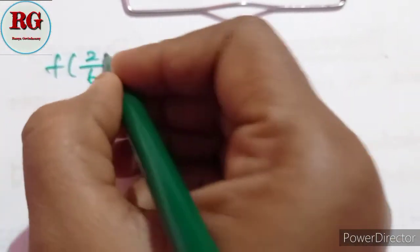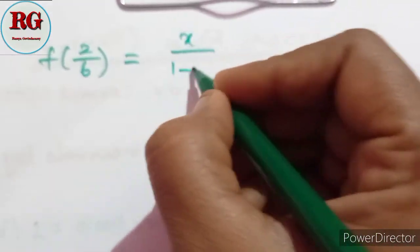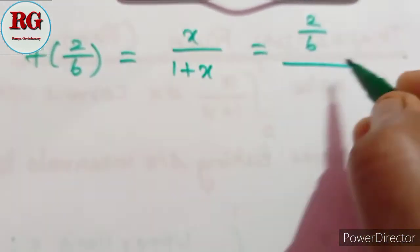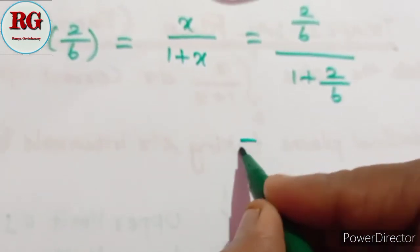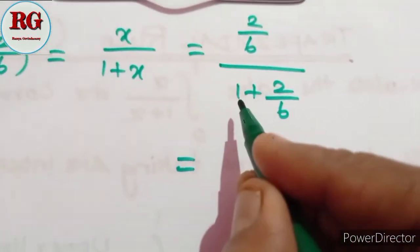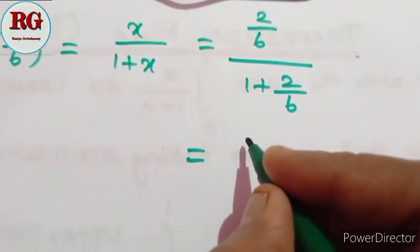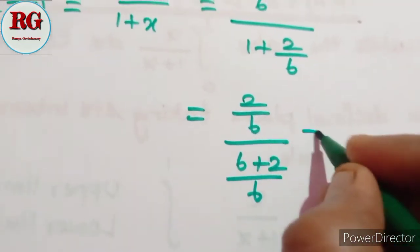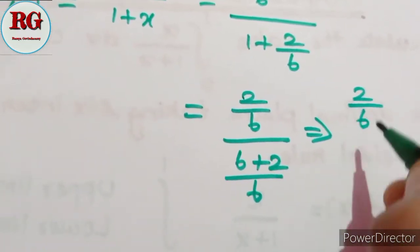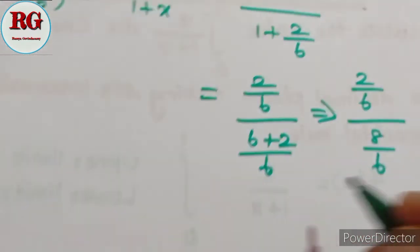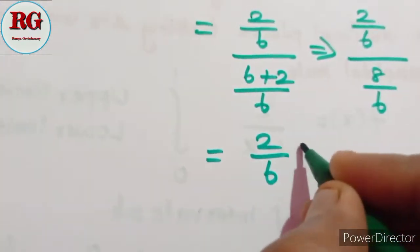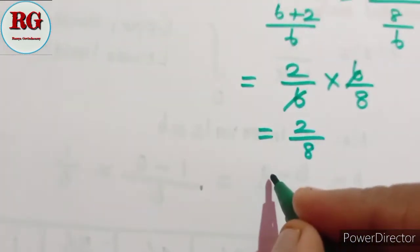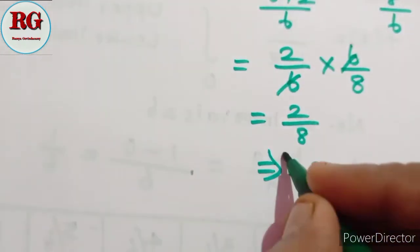Next, f(2/6): using the same formula x divided by (1 plus x), we get (2/6) divided by (1 plus 2/6). Taking LCM gives (2/6) divided by (8/6). Flipping: (2/6) multiplied by (6/8) equals 2/8, which simplifies to 0.25.